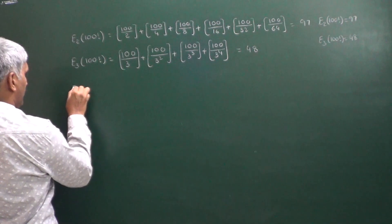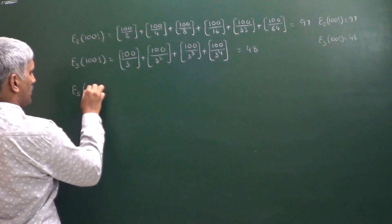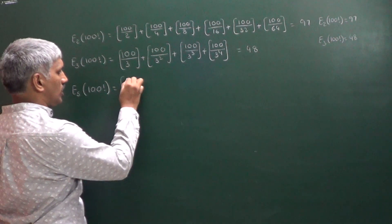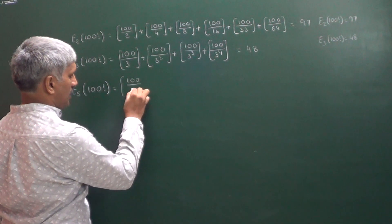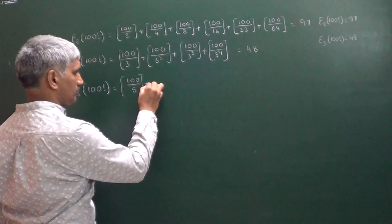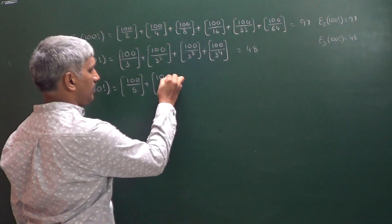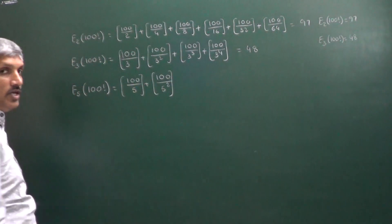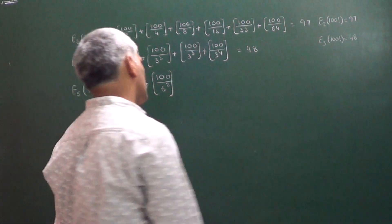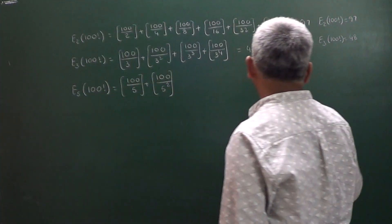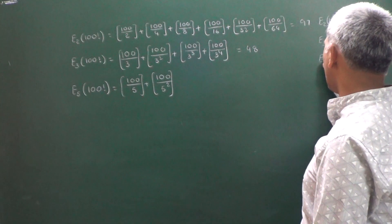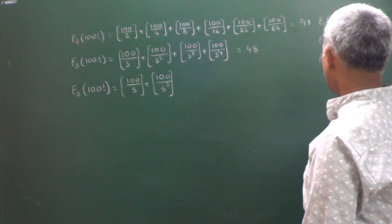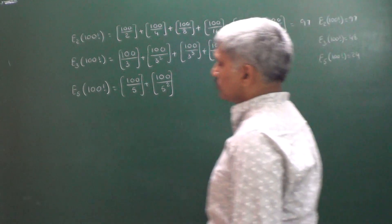In a similar way, the exponent of 5 in 100 factorial is: floor(100/5) + floor(100/25) = 20 + 4 = 24. So the exponent of 5 in 100 factorial is equal to 24.